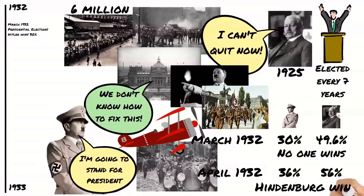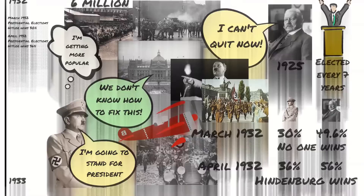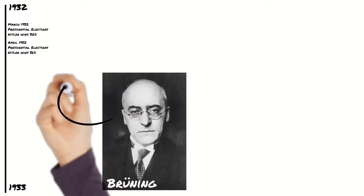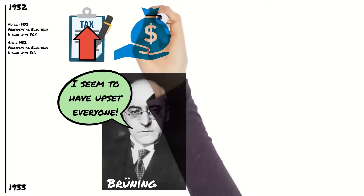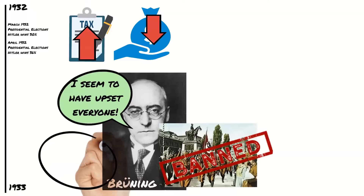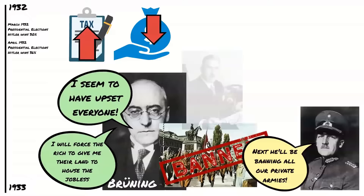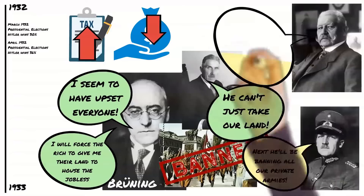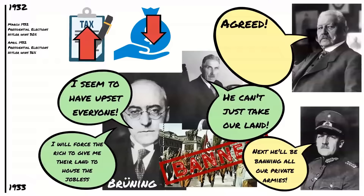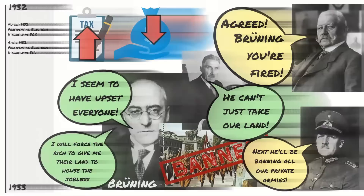Hitler took it as a good sign that his support was increasing. Meanwhile in the Reichstag, Chancellor Brüning was trying to manage the challenges brought by the Depression. He had already angered the left and right by raising taxes and cutting unemployment benefits. Now he tried to deal with the violent behaviour of the SA and the SS by banning them, and he announced a plan to compulsorily buy land from the rich to house the unemployed. The right-wing parties were outraged and von Hindenburg hated the policy. Without support of the Reichstag or the President, Brüning was forced to resign on 30 May 1932.